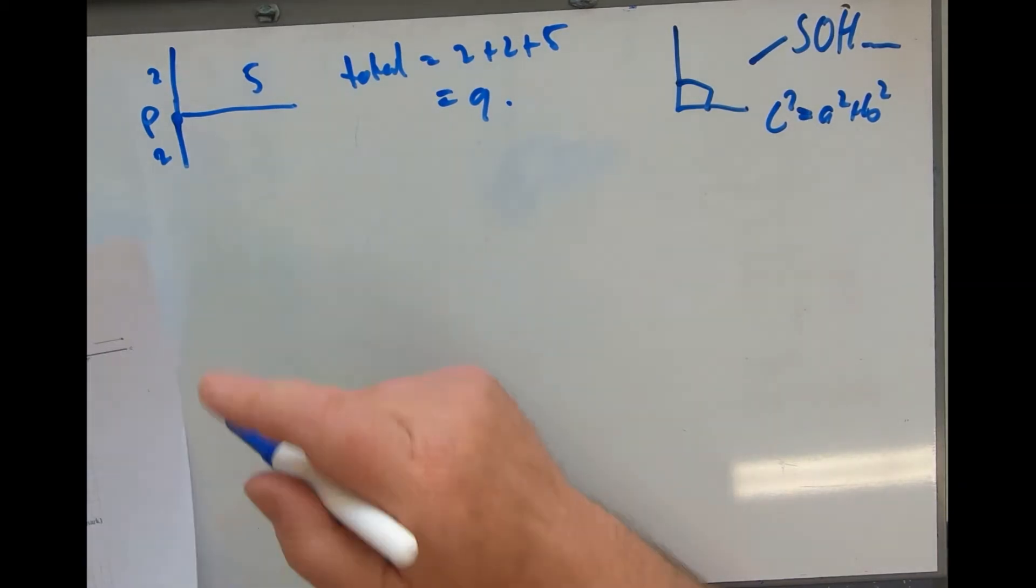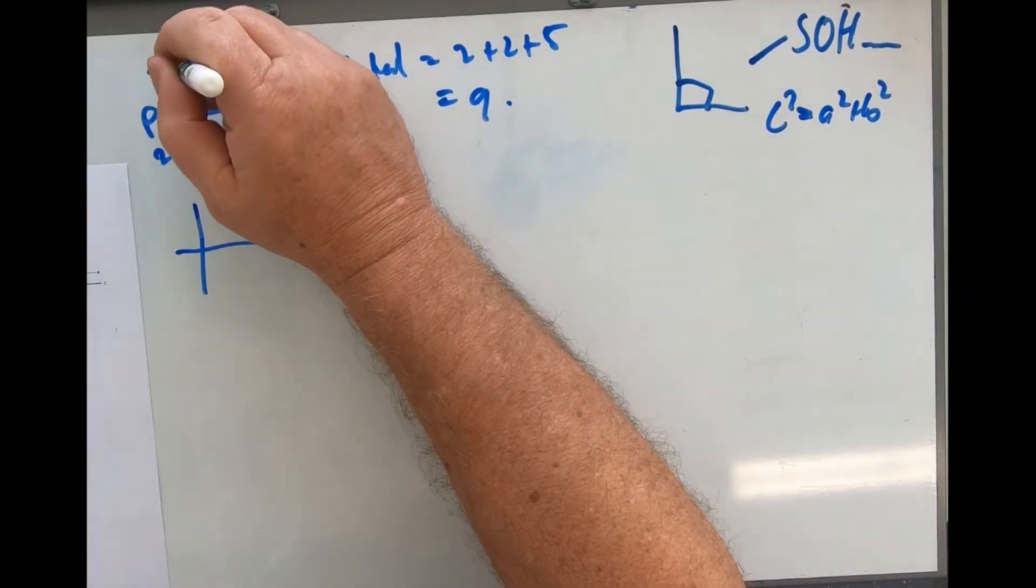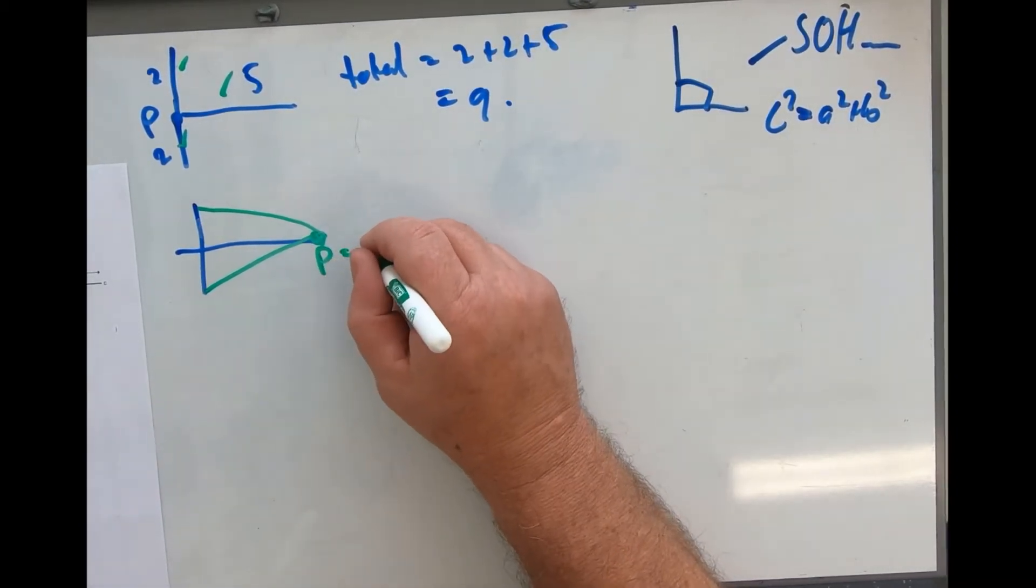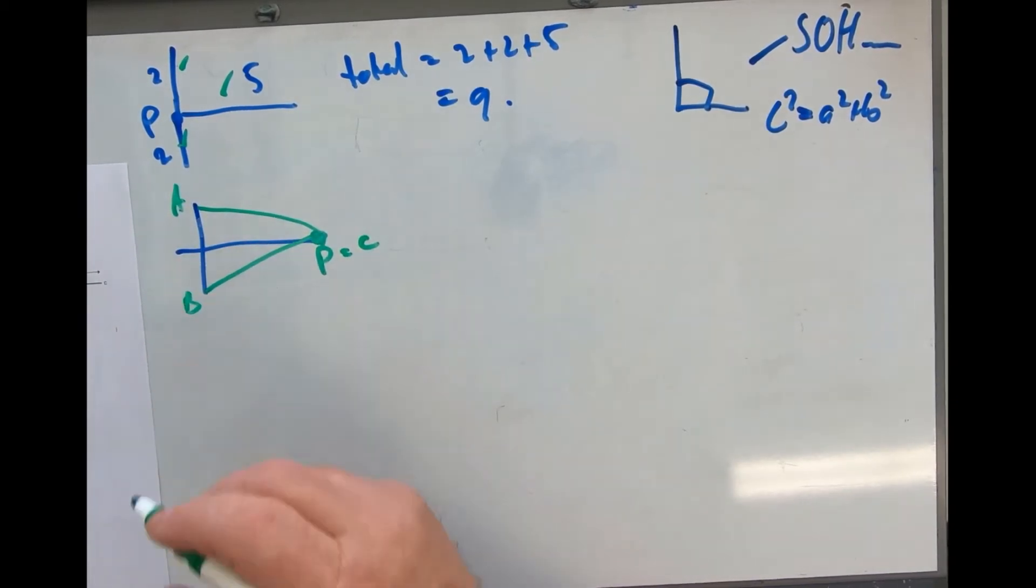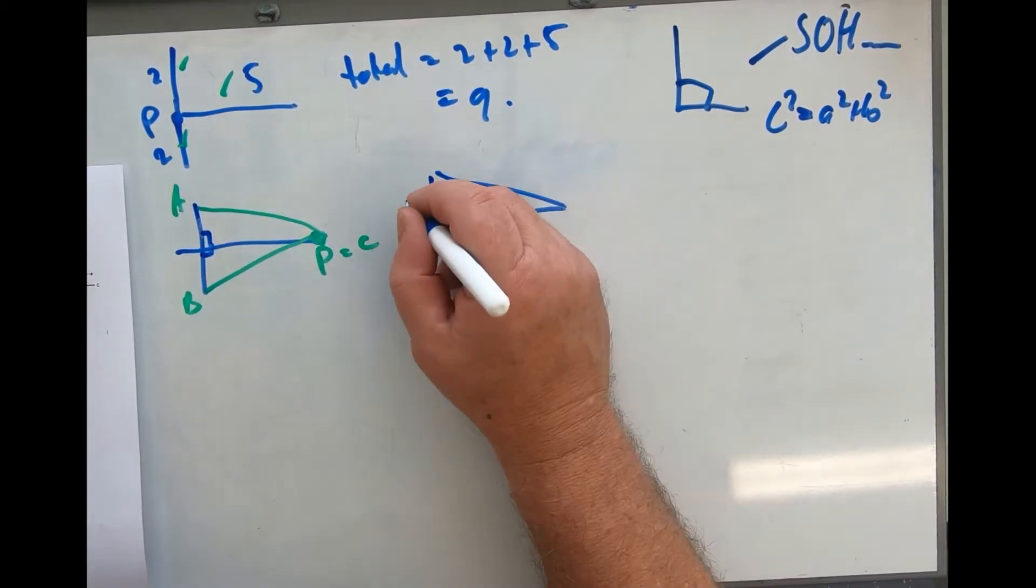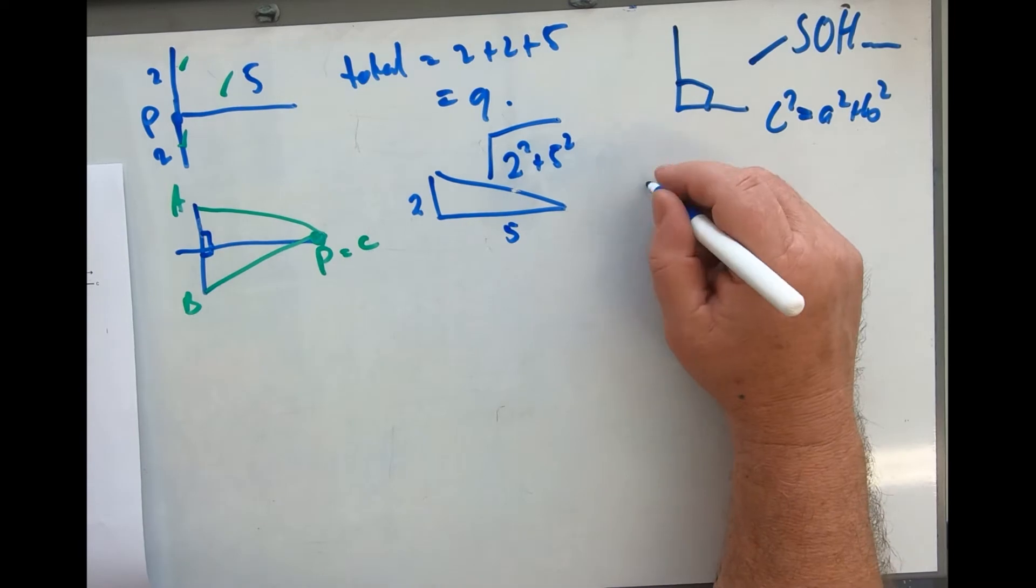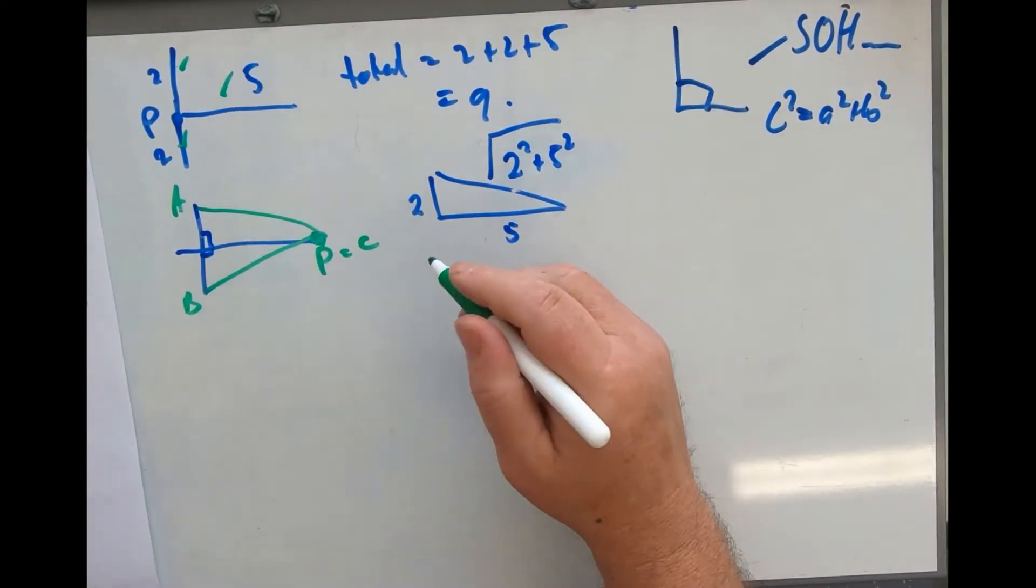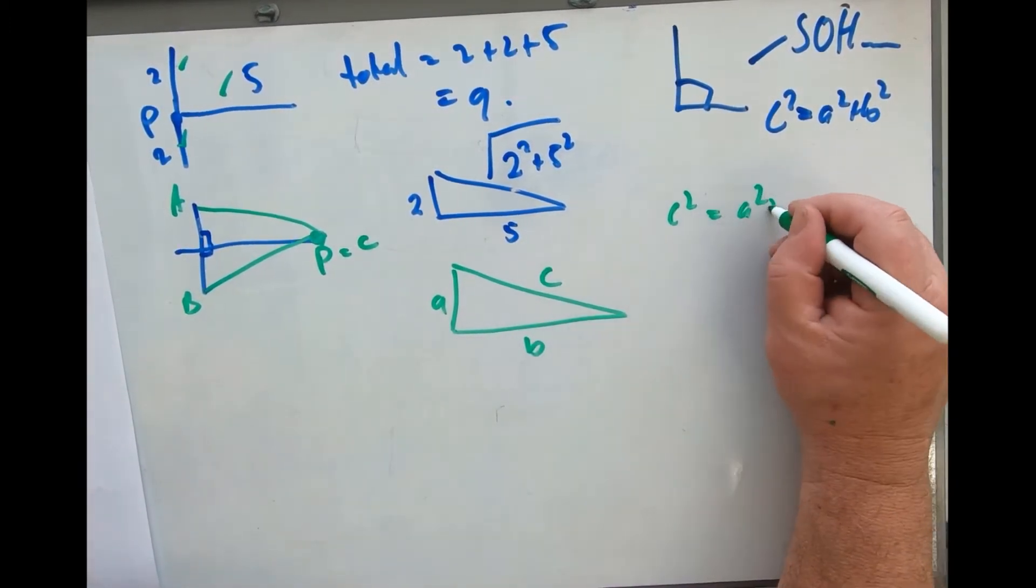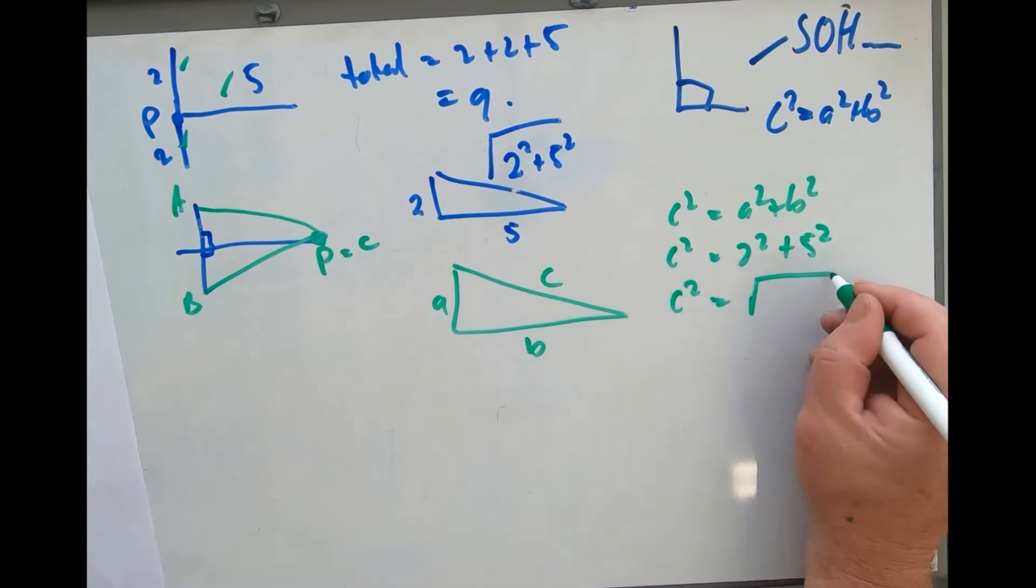If it was at C, those two distances. If P equals C, here's a little Pythagoras: c squared equals a squared plus b squared. C squared equals 2 squared plus 5 squared, so c equals the square root of 29.